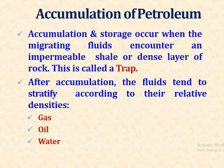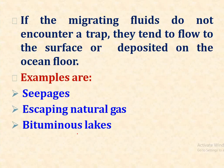Accumulation of petroleum: accumulation and storage occur when the migrating fluid encounters an impermeable or dense layer of rock called a trap. After accumulation, the fluids tend to stratify according to their relative densities — gas, oil, and water. If the migrating fluids do not encounter a trap, they tend to flow to the surface or deposit on the ocean floor.